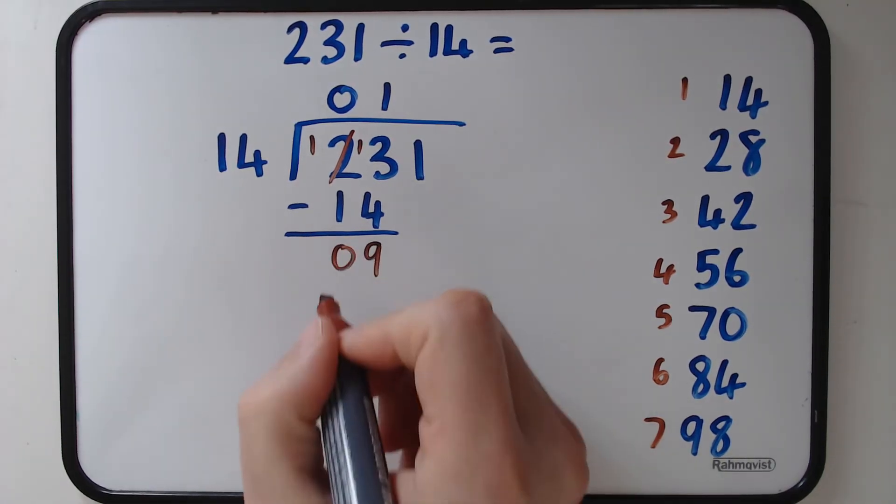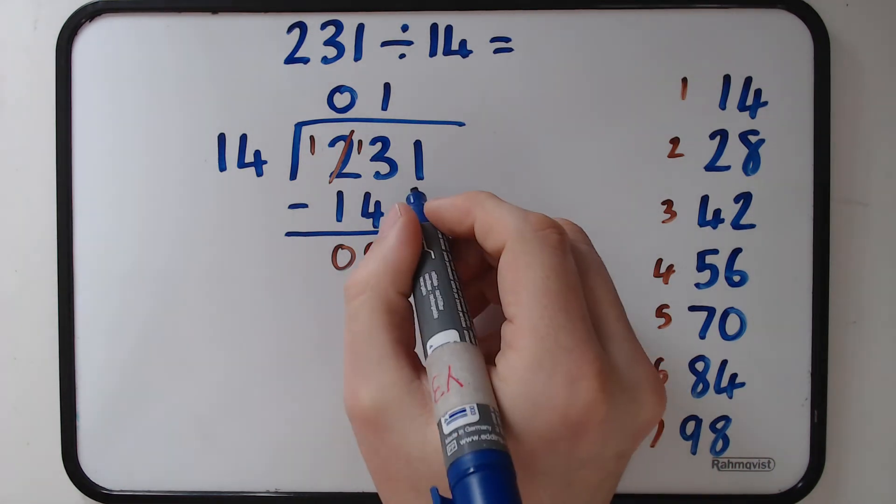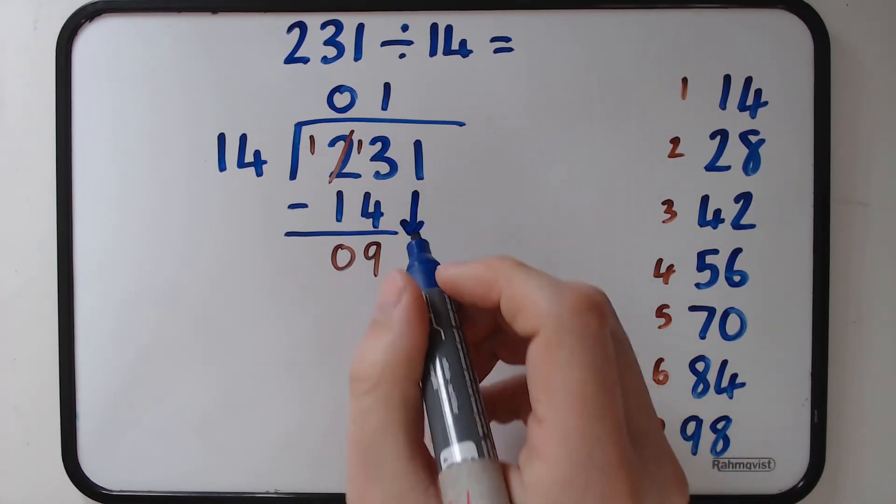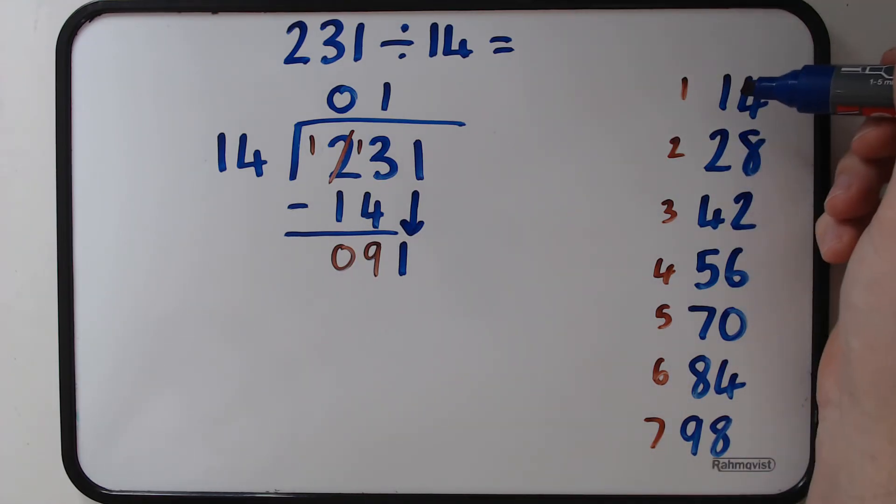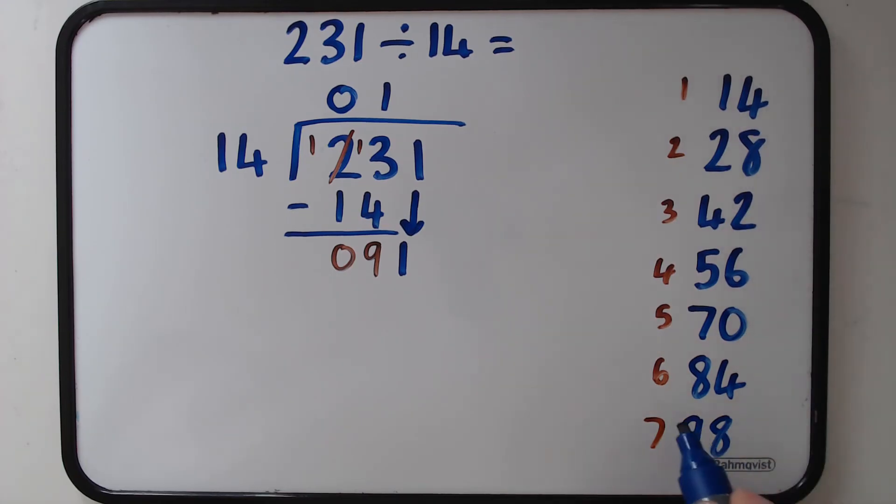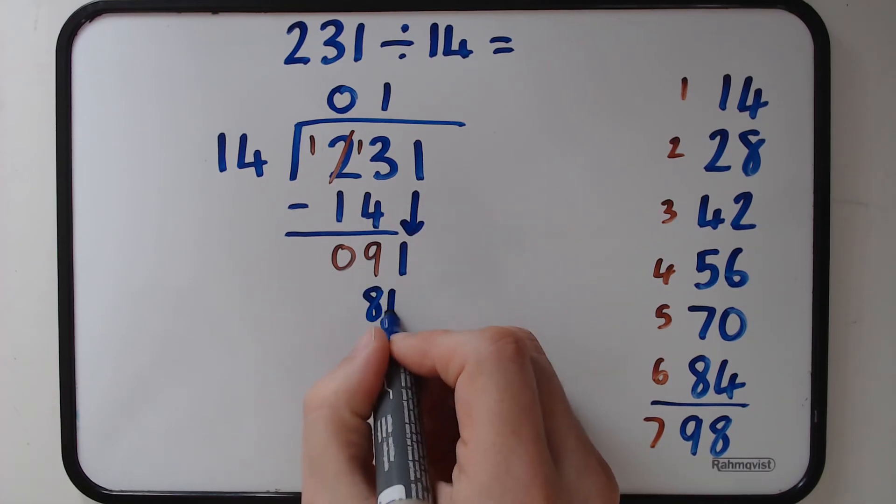Now, same as the other questions and answers, we bring the next number down. So we've got 91. Now, this is where the 14 times table on the side is quite handy because we can quickly look down and we can go, particularly if they're numbered, we can go 6 lots, 84, done. So we know that 84 is going to go down here and we know that 6 goes up there.